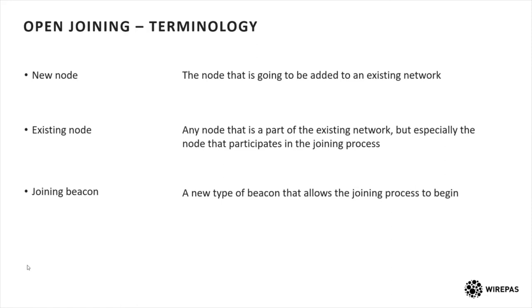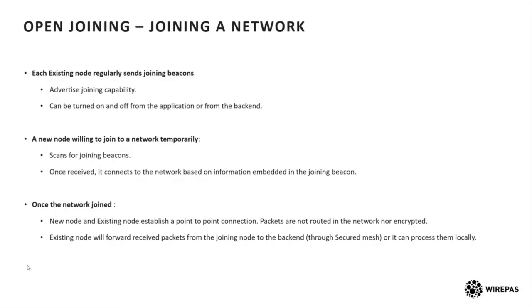When a node wants to join the network, existing nodes in the network can broadcast joining beacons at regular intervals. What these beacons do is tell all new nodes that they can join the network. I want to stress that I said 'join' and not 'connect' because joining is not exactly a connection — we will see that after. These beacons can be controlled from the application, but they can also be controlled from the backend with the remote API, meaning you can turn on or off the joining capabilities directly from your backend.